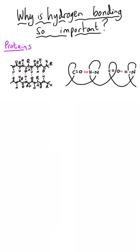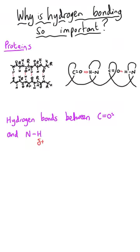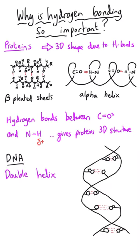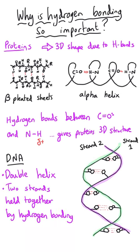Hydrogen bonding is absolutely essential for the existence of life itself. Proteins, which make up so many components of living things, have hydrogen bonding between different regions of the chain, giving them their three-dimensional structure and keeping pleated sheets or alpha helices in their particular arrangement in three-dimensional space. Additionally, DNA — arguably the most important molecule in all living things — has a double helix structure where the two strands are connected by hydrogen bonds between the base pairs: two hydrogen bonds for one type of base pair and three for the other. Without those hydrogen bonds, DNA would literally fall apart into two separate strands, and life as we know it wouldn't be possible.